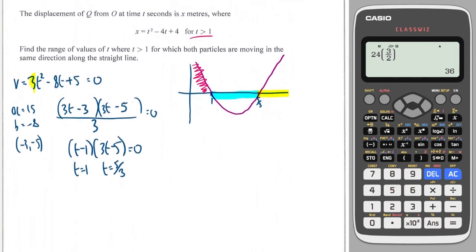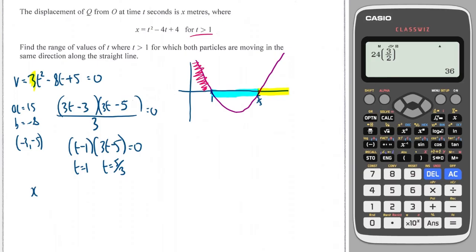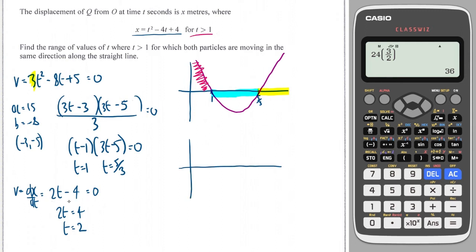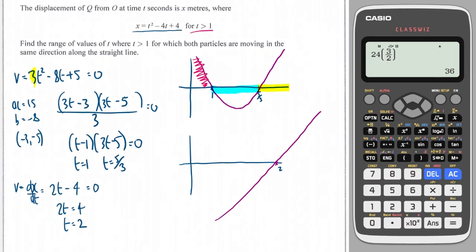Now for the other object: x equals t squared minus 4t plus 4. Differentiating gives velocity 2t minus 4. Setting equal to 0 gives t equals 2. Plotting this linear velocity function — it's a straight line through t equals 2 — tells us the object is going backwards before t equals 2 and going forwards after t equals 2.